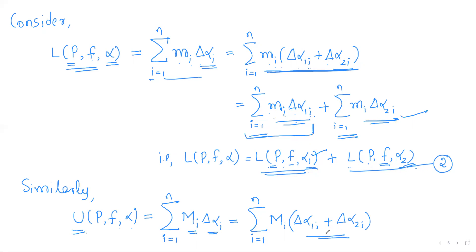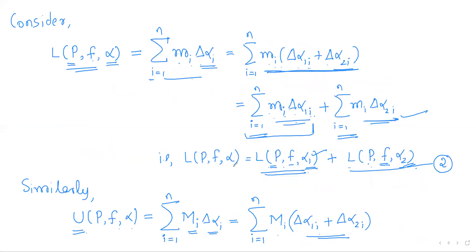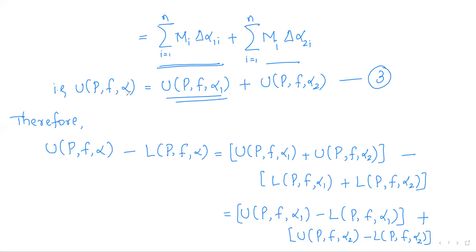Similarly for the upper Riemann-Stieltjes sum: U(P, f, α) = Σ Mᵢ · Δαᵢ. Since Δαᵢ = Δα₁ᵢ + Δα₂ᵢ, splitting gives Σ Mᵢ · Δα₁ᵢ + Σ Mᵢ · Δα₂ᵢ, which is U(P, f, α₁) + U(P, f, α₂). So we have two equations: L(P, f, α) = L(P, f, α₁) + L(P, f, α₂) and U(P, f, α) = U(P, f, α₁) + U(P, f, α₂).